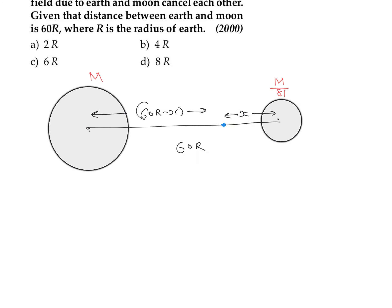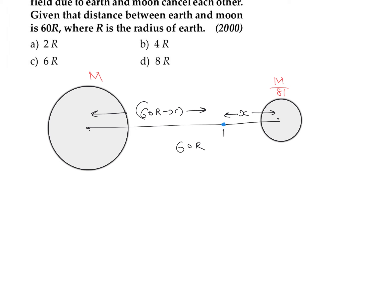We can write the equation for gravitational field at this point. Due to Earth (mass M), the gravitational field is GM divided by (60r minus x) squared. That should equal the gravitational field due to the moon, which is GM/81 divided by x squared, because the two fields must be equal in magnitude and opposite in direction for the net gravitational field to be zero. We can cancel G and M from both sides.